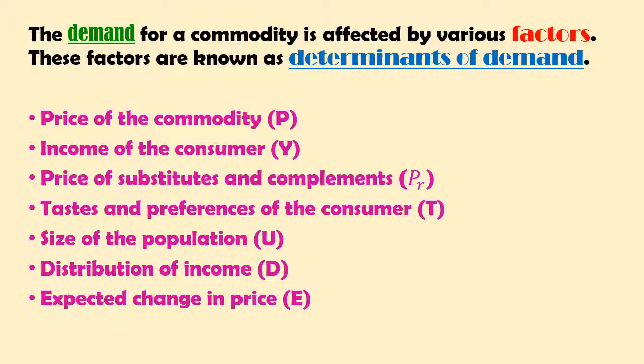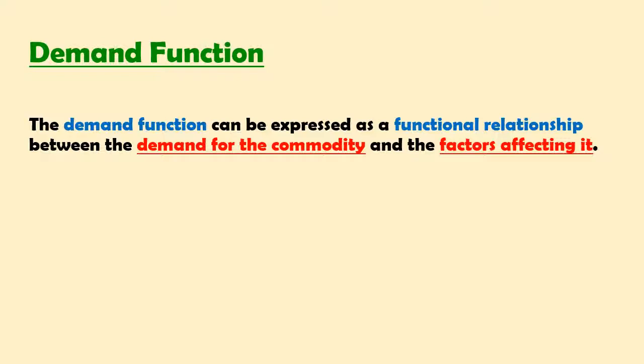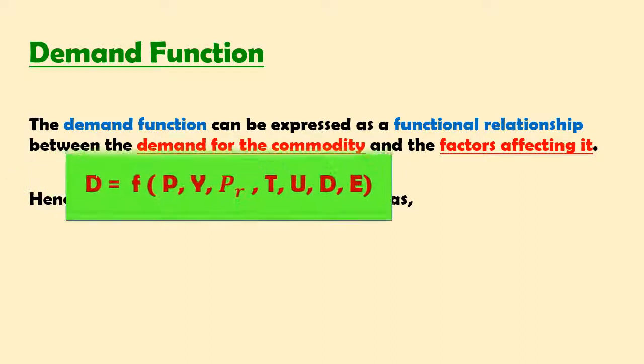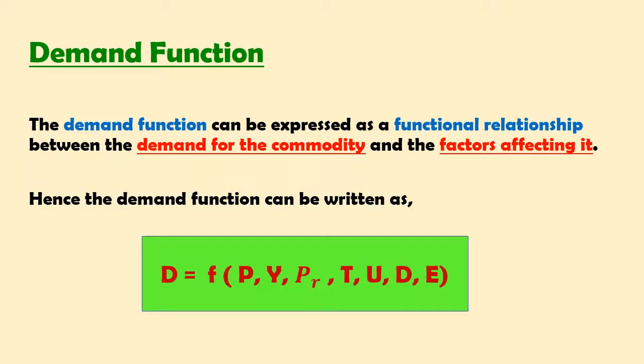The relation between demand for a commodity and its determinants gives us the demand function. The demand function expresses a functional relationship between the demand for the commodity and the factors affecting it. Hence, the demand function can be written as D = f(P, Y, PR, T, U, D, E).